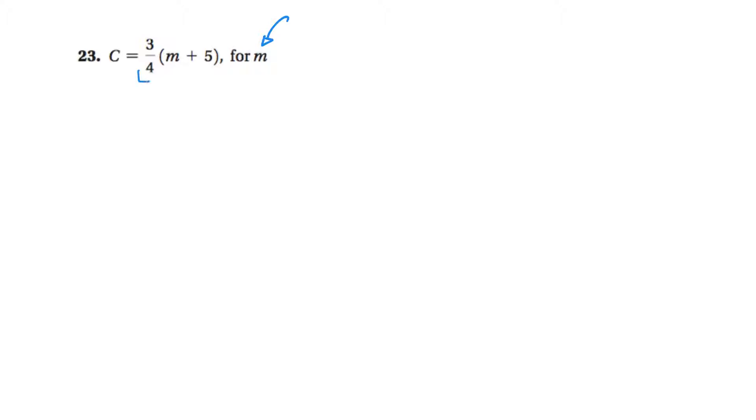Now notice that this is one term, because it's three quarters times m plus five. That's all one term. And c is a term by itself too. So I'm going to multiply this by four, and I'm going to multiply this whole thing by four. So on the left side, it'll turn out to be 4c. On the right side, four times three is 12, divided by four is three. So this stuff cancels to be a three, and then m plus five.